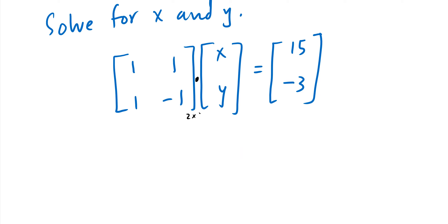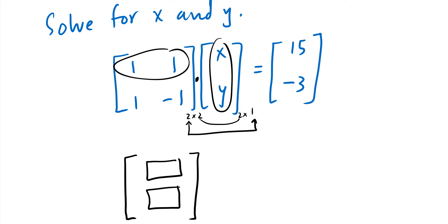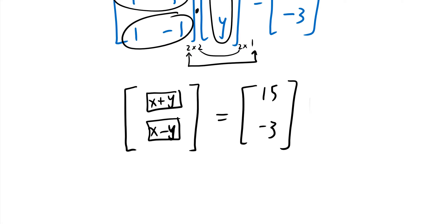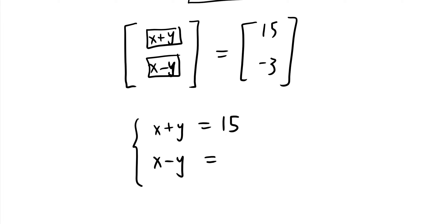The left side is a 2×2 times a 2×1 — the dimensions match, giving a 2×1 result. Row by column: 1·x + 1·y = x + y for the first entry, and 1·x + (-1)·y = x - y for the second. The left side becomes [x + y; x - y]. Since these two matrices are equal, corresponding entries must be equal, so x + y = 15 and x - y = -3.